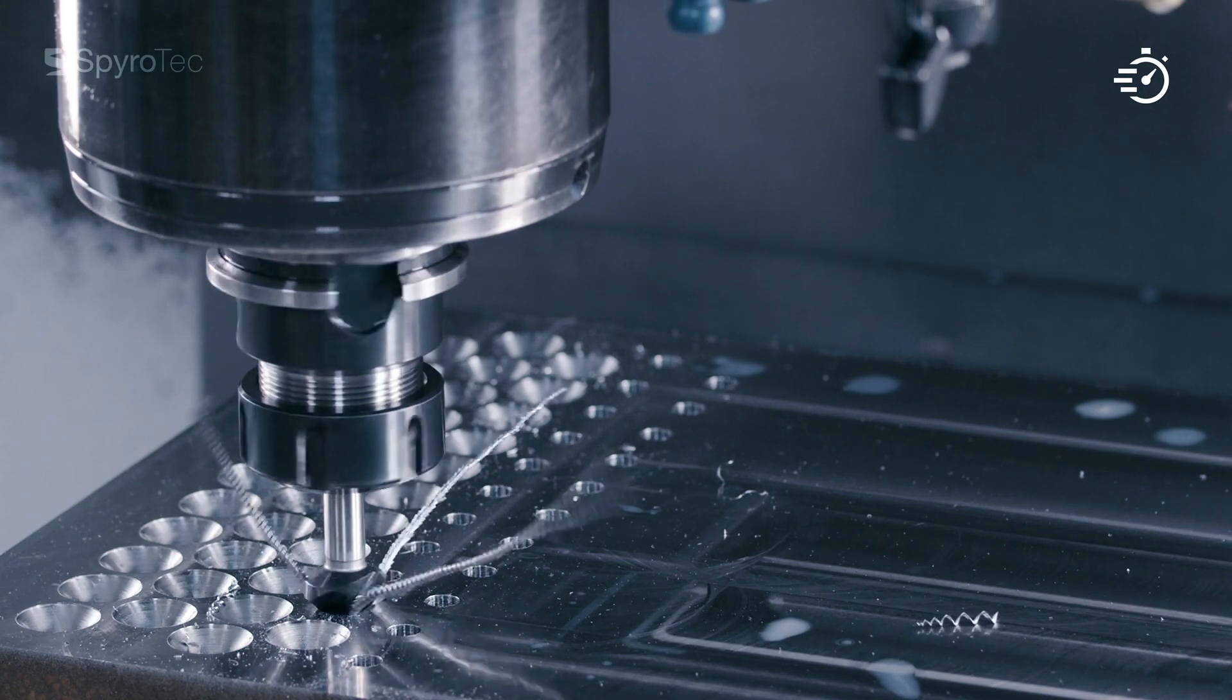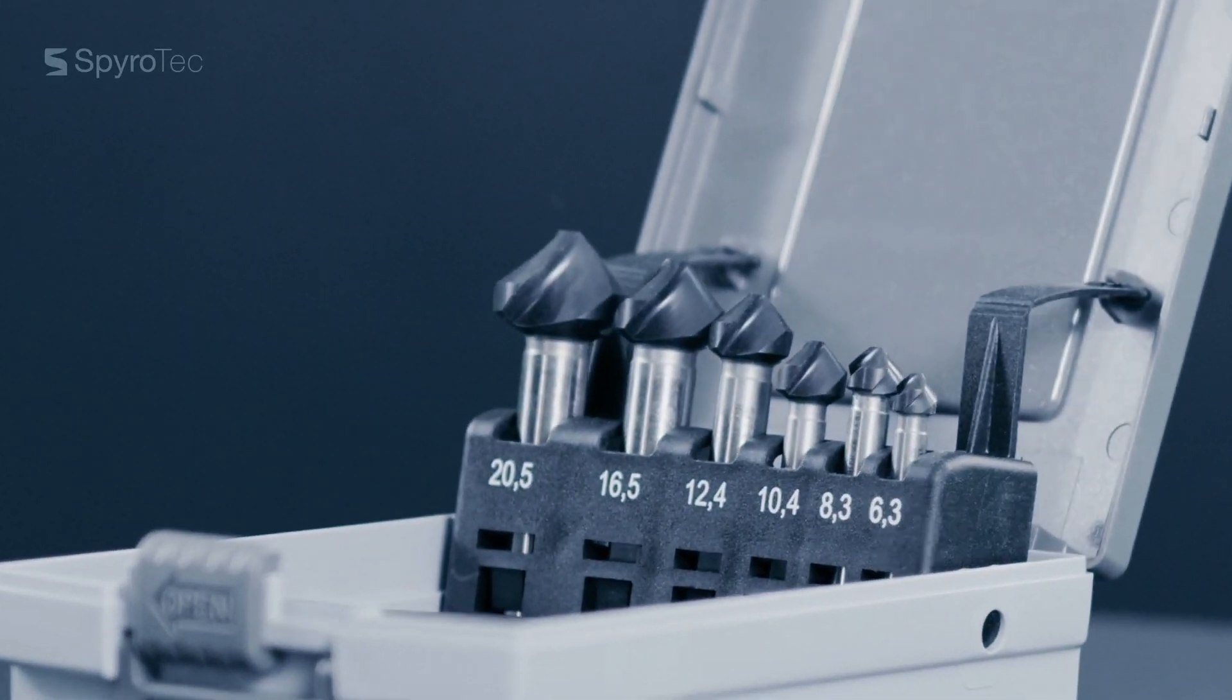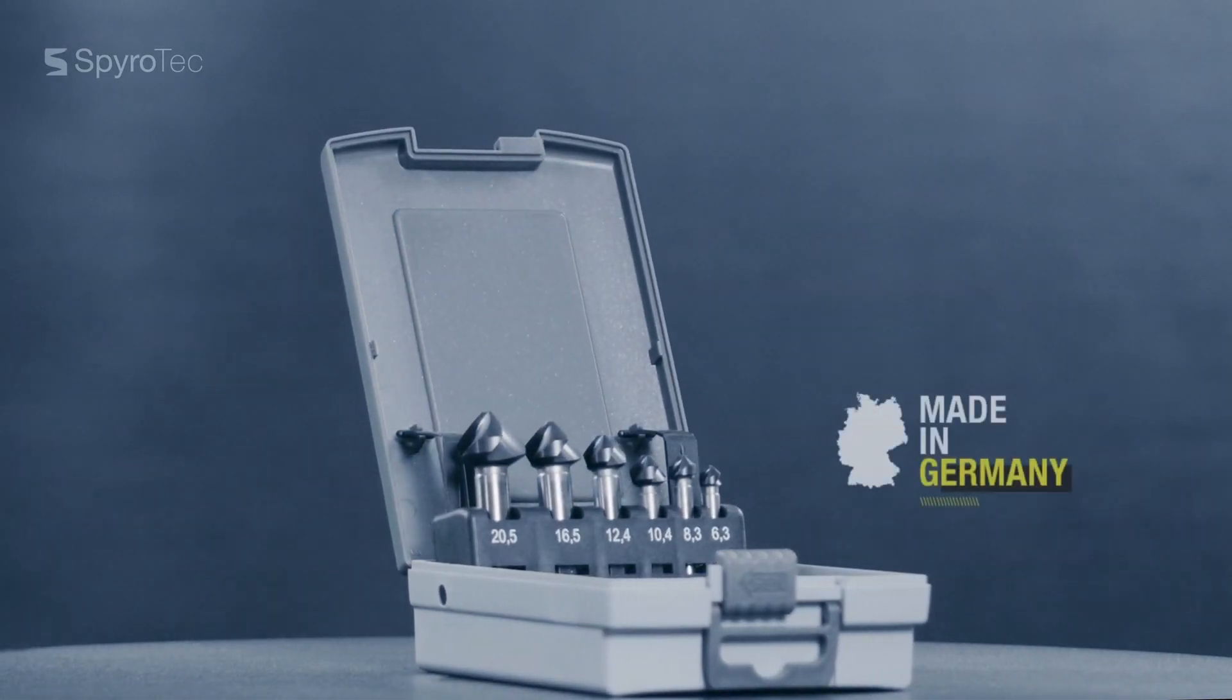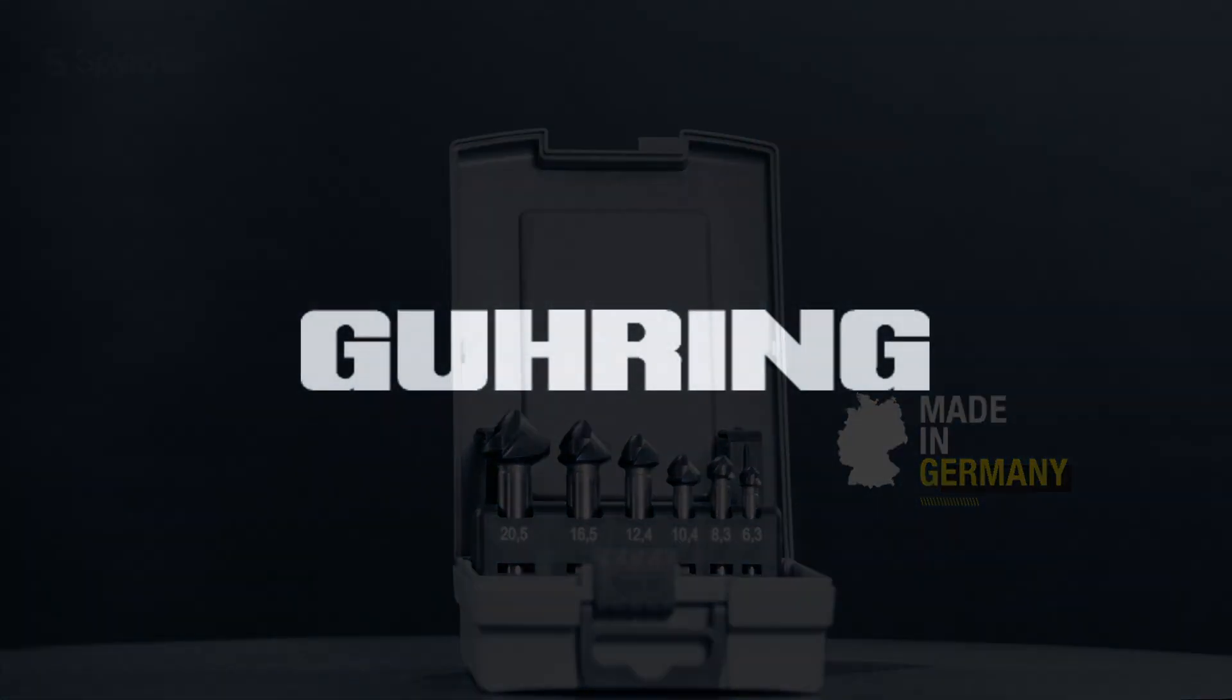The Spirotech from Göring is available as single item or as a set with a 90 degree, 60 degree and 82 degree countersink angle and also with a 120 degree as a special tool.